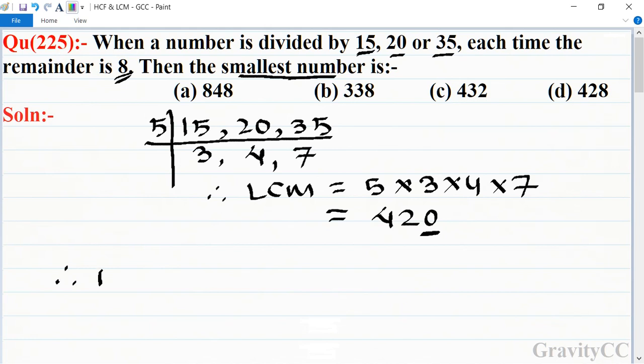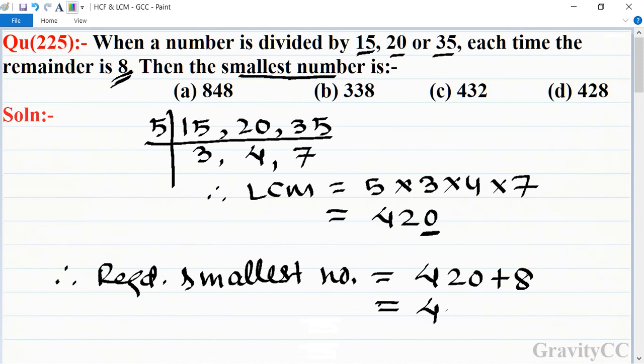Therefore, the required smallest number is equal to 420 + 8 = 428, which is the required answer. Option D is the correct answer.